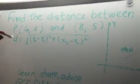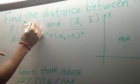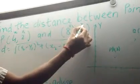In this one, this point P, we regard this one as x1, this 2 is y1, 8 is x2 and 5 is y2.